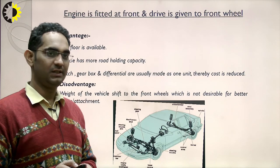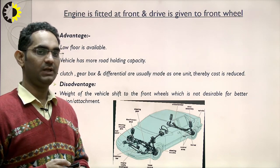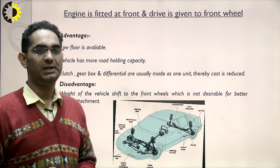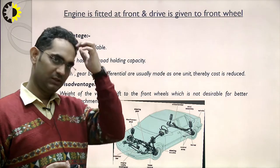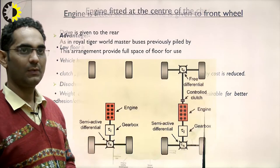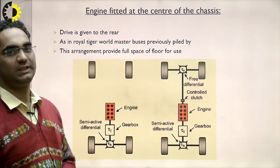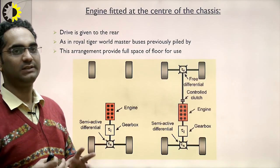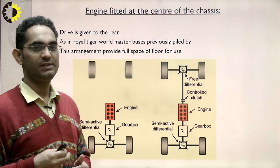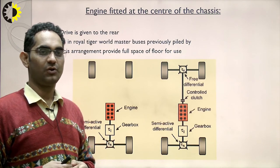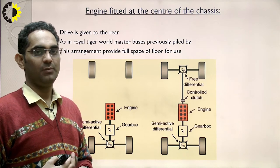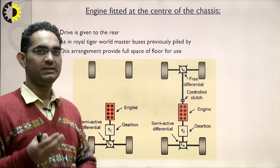Disadvantage of front-engine front-wheel drive: weight of the vehicle shifts to the front wheels, which is not desirable for better adhesion. When the engine is fitted at the center of the chassis, the drive is given to the rear, as in Royal Tiger World Master buses. This arrangement provides the full space of the floor for use.